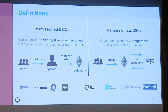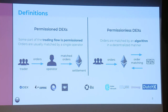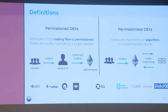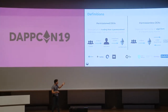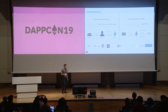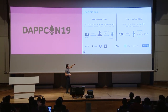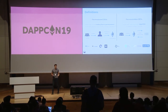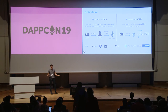Then we have permissionless DEXs, where orders sent by customers are matched by an algorithm in a decentralized way. Customers send orders directly to the blockchain, which functions as the data availability layer, and the orders are matched there with some algorithm. Cool projects facilitating these techniques include Kyber, EtherDelta, Uniswap, and the DutchX. 0x sits in the middle — the protocol is permissionless, but most of the time it is used by relayers as something permissioned.